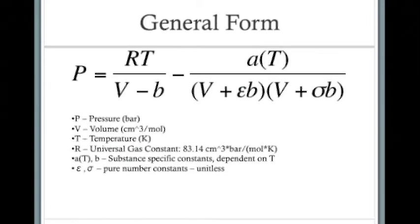And then we also have A as a function of temperature and B, which are substance specific constants that also depend on temperature, and lowercase sigma and epsilon are pure number constants and are unitless.